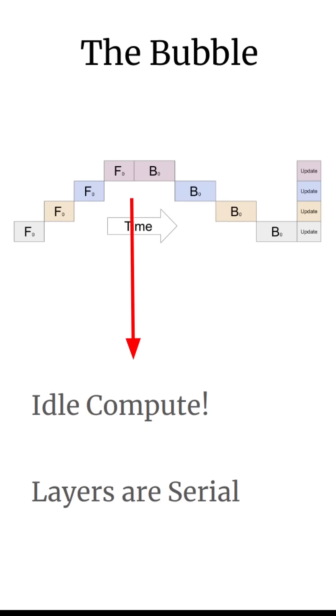While this is nice, it leads to a problem which is known as the pipeline bubble. We have all this idle time where we're not actually utilizing our parallelism to do anything, because we need to wait for the layers around us to do their computation. Because of this serialism, we don't actually get any benefits from this type of pipeline parallelism.